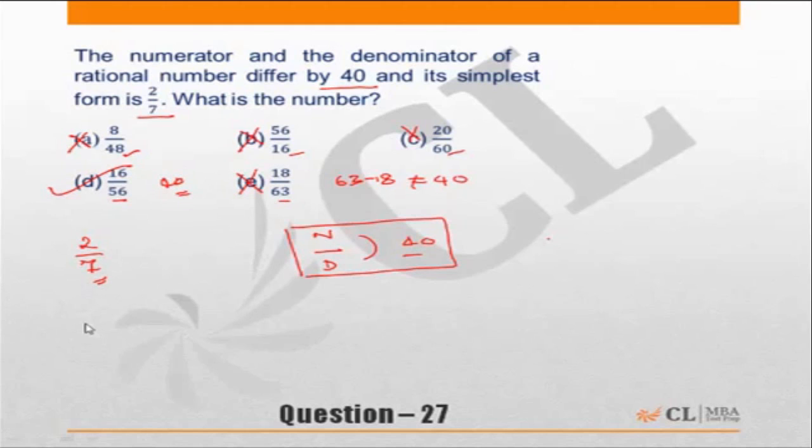Now let's look at the standard way of solving the question which I hope you are aware of. It says in the simplest form it is 2 by 7. In the simplest form the difference between the numerator and denominator is 5. But the desired difference is 5 into 8. The desired difference is equal to 5 into 8 which is equal to 40.